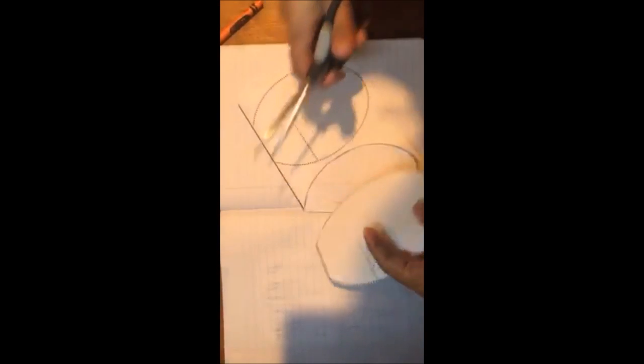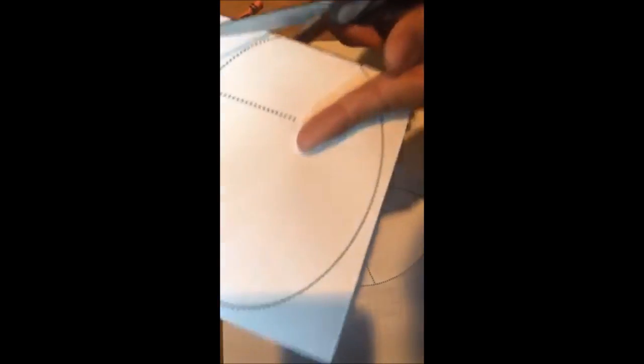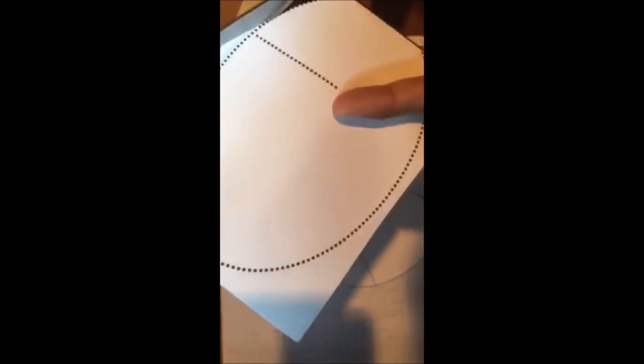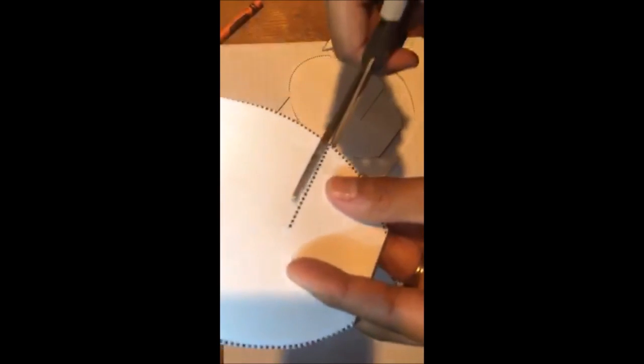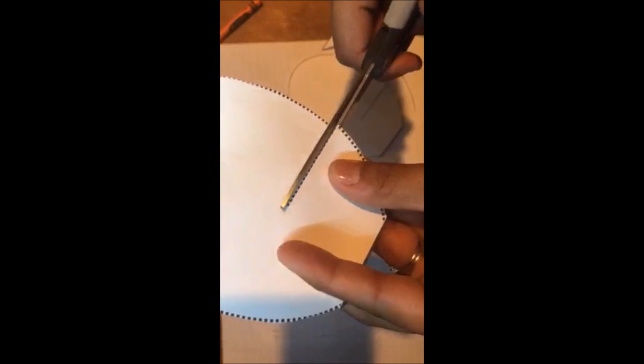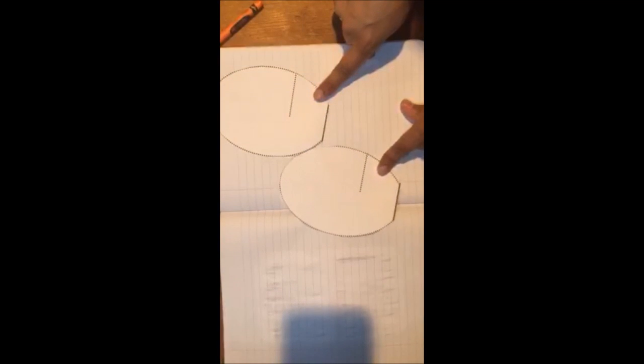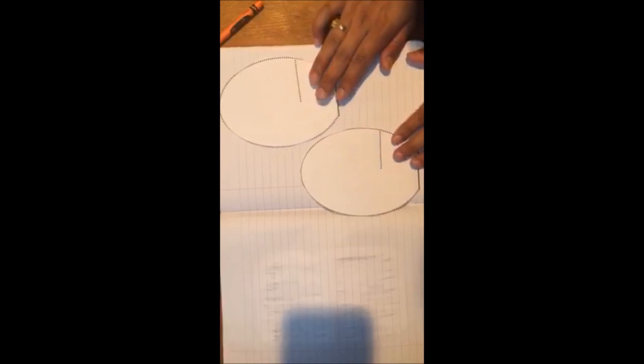And then you see it has a slit in it, so I'm going to cut that slit as well. Now what's important is the way that these are going to overlap.